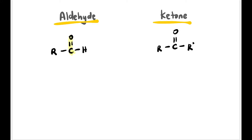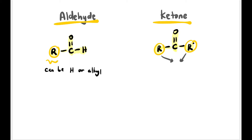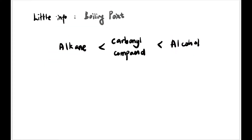Okay, structure in more detail. For aldehyde, it has an H at the end — at least one hydrogen. For ketone, both sides are R groups, alkyl groups. The R in aldehyde can be alkyl or hydrogen, meanwhile in ketone it can be alkyl or aryl — usually alkyl, not hydrogen. Another little info: the boiling point of carbonyl compounds is between alcohol and alkane because it is a polar molecule.